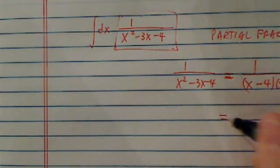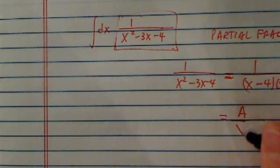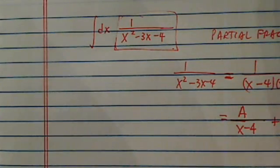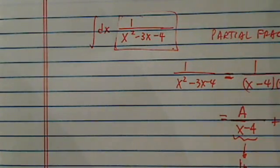From here, what we need to do is find two numbers, A and B, such that the above equation is true. Because if we can find A and B, this chunk, when you integrate it, turns into a natural log. And so does this chunk into a natural log.